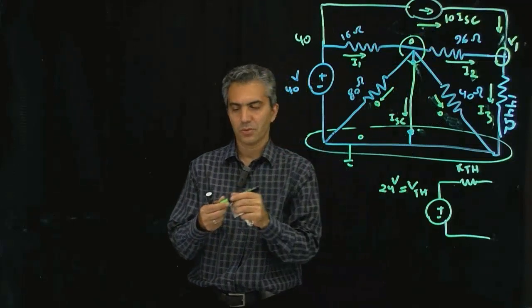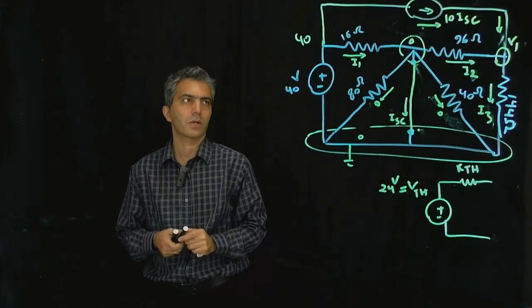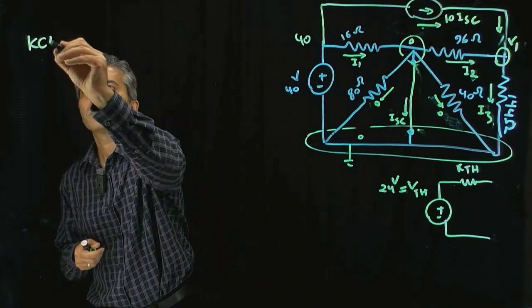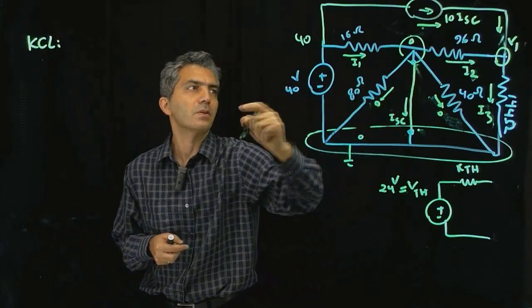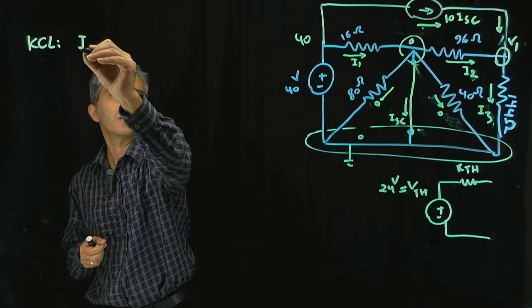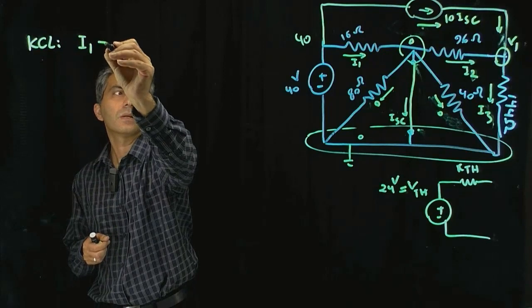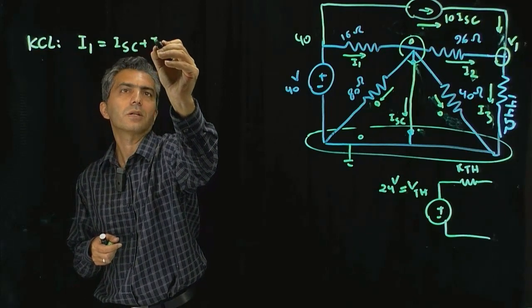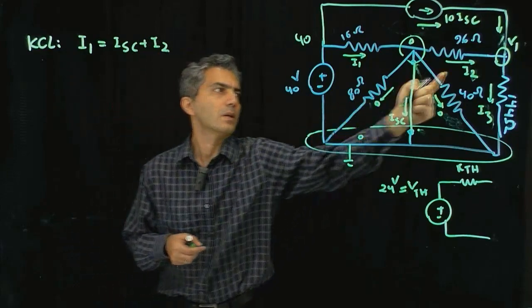That's our I short circuit, so we're ready to write equations in KCL. KCL, in this case, for that specific node, it says that I1 is going in, and I short circuit is going out, and I2 is going out.